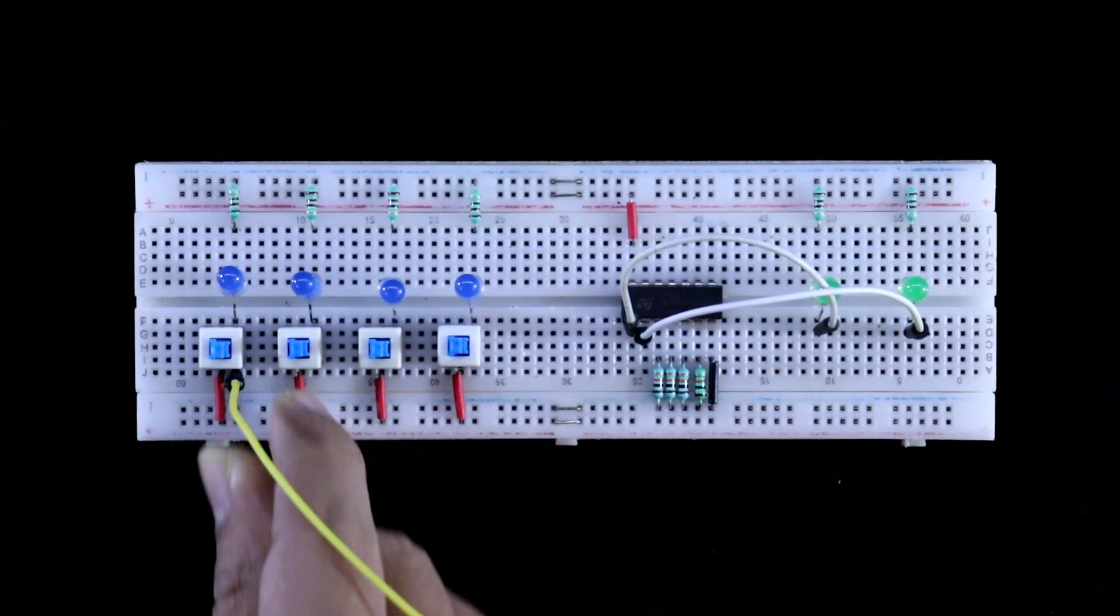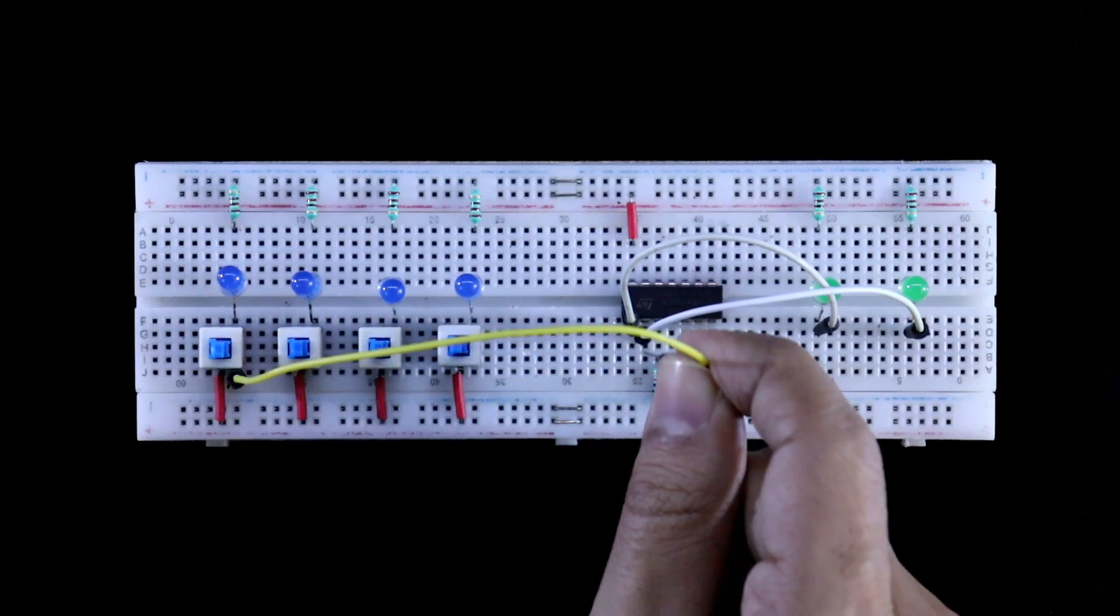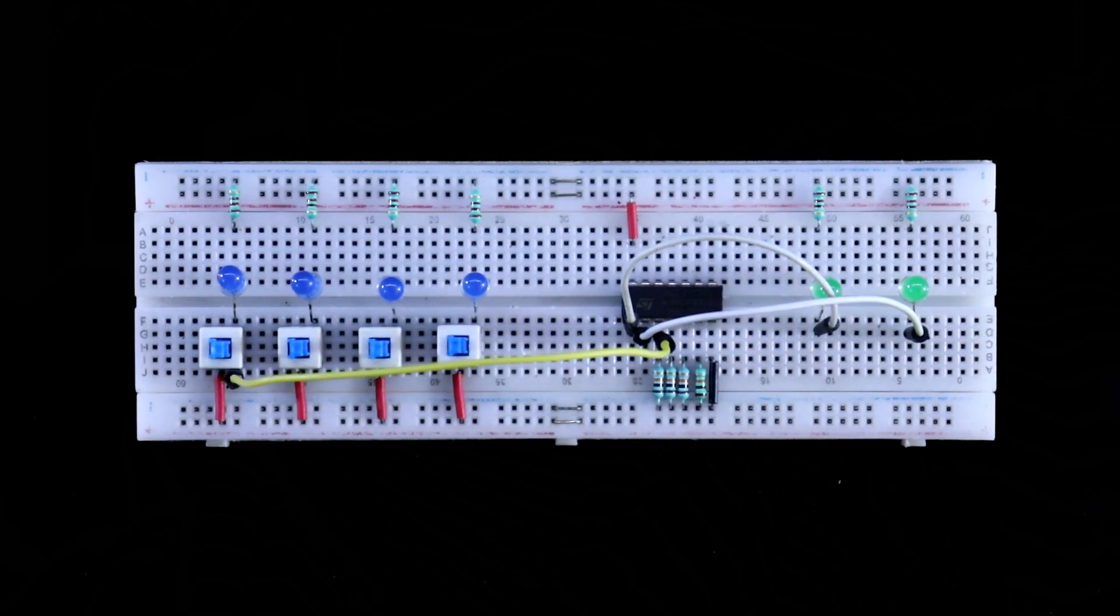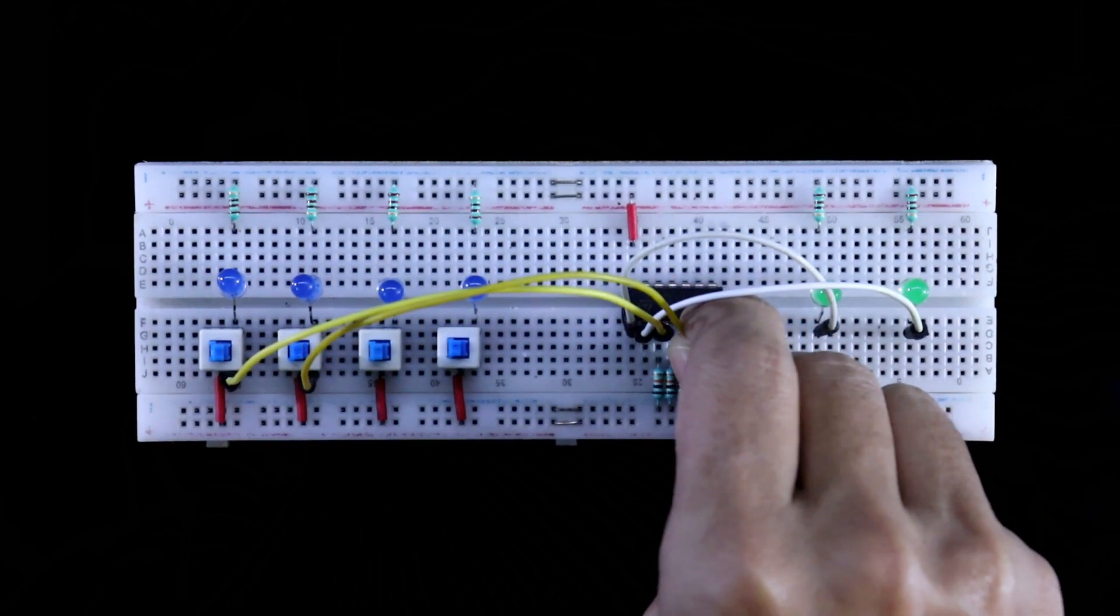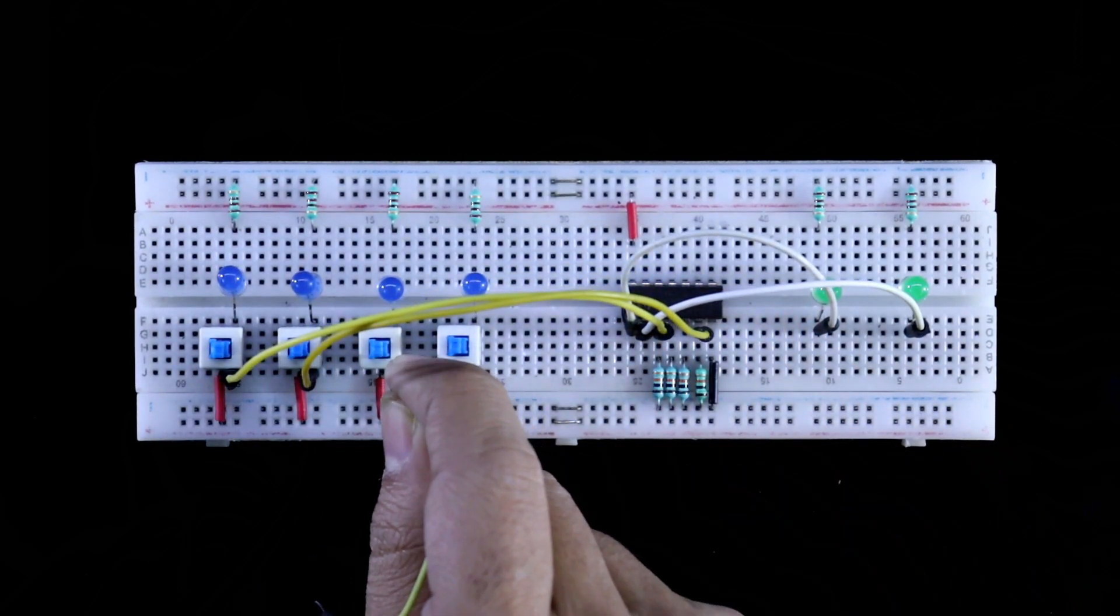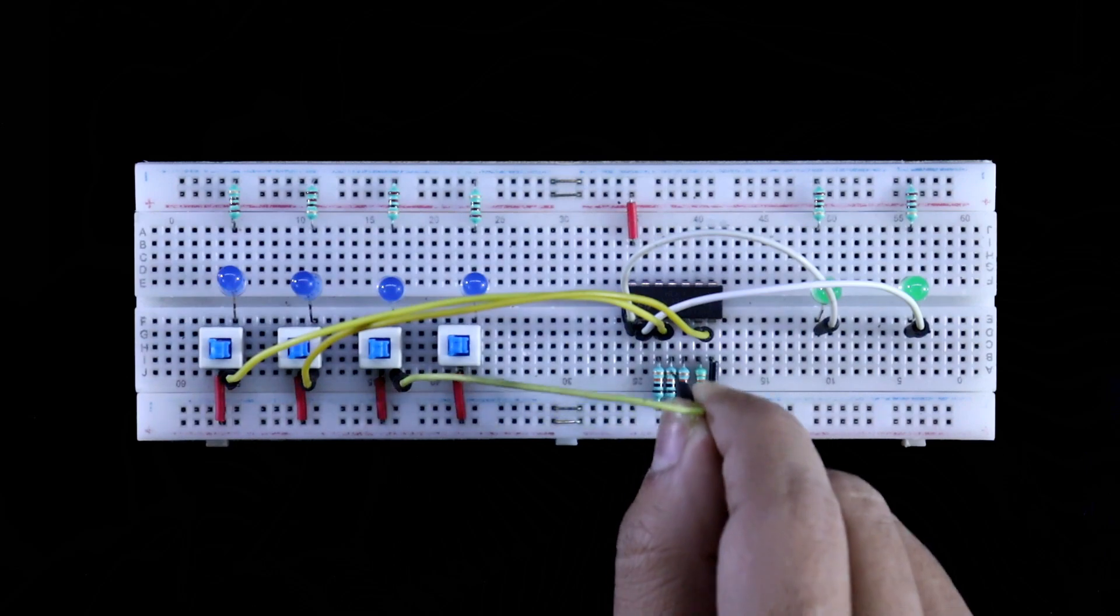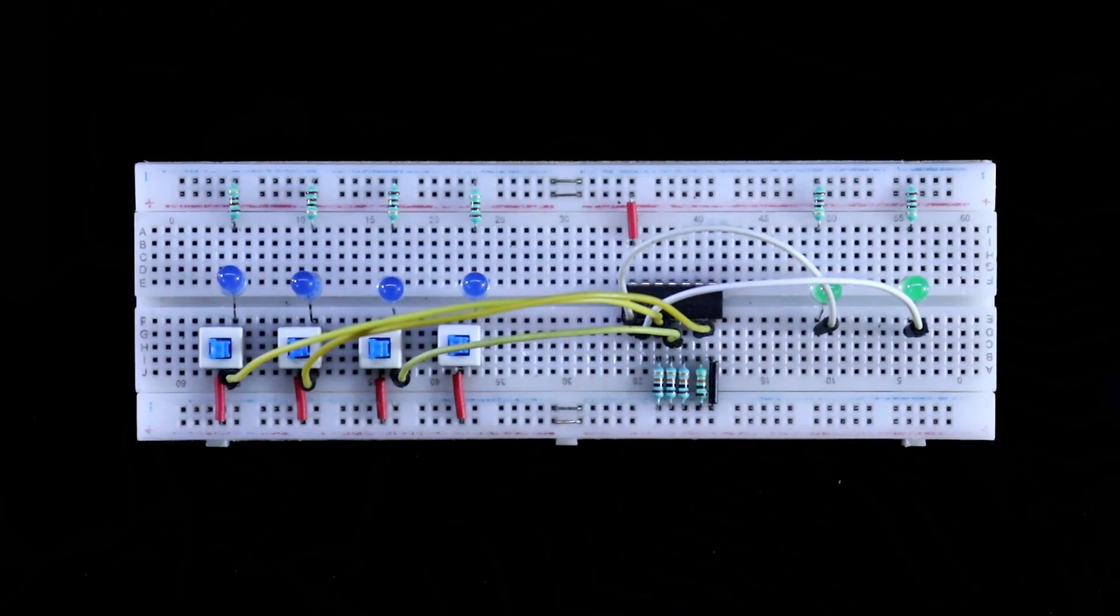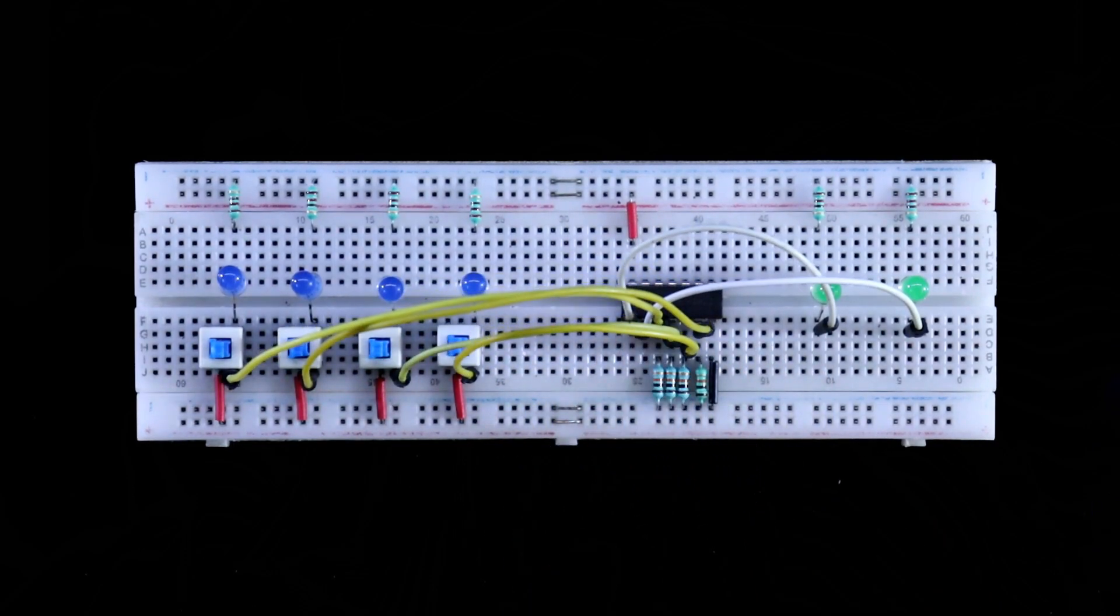This switch, it is clock, and clock is pin 3. Then we have set, set is pin 6. Then we have reset, reset is pin 4. Then we have data, data is pin 5. So this is how we have connected.